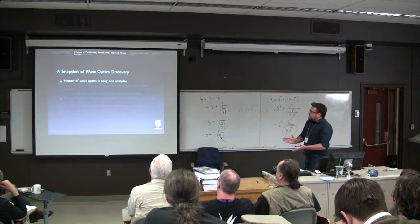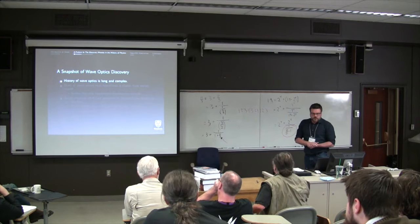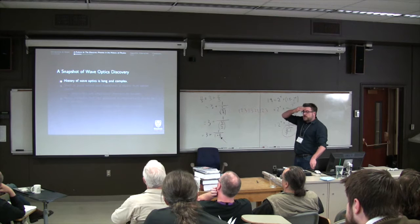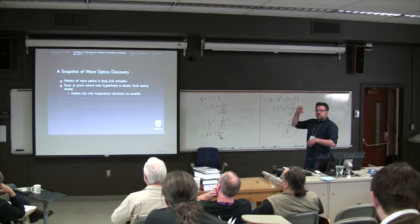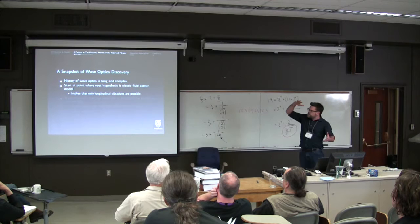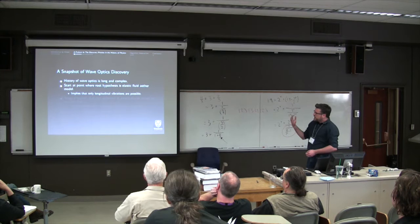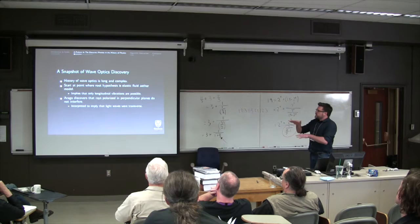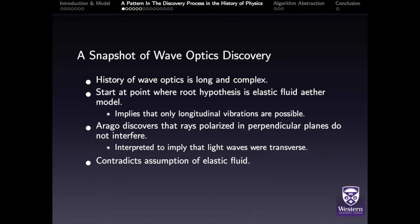Okay, so now to give a very brief snapshot of the discovery of wave optics. So it's just part of the story. It's not the whole thing or anything like that. But it's helpful, I think, to pick up some of the patterns. So the history of wave optics is long and complex, obviously. We're just going to jump into the point right at the end where the root hypothesis was something about the constitution of the ether that would determine light behavior as a wave. So it was assumed at the time that it was an elastic fluid ether model. And in that kind of a model, you can only have longitudinal vibrations, like sound waves. And Arago discovers that rays are polarized. Rays polarized in perpendicular planes don't interfere with one another. So the understanding was for longitudinal vibrations, that's not possible. So it was interpreted to imply that light waves were transverse. So we have to toss out that root hypothesis and replace it with another one.